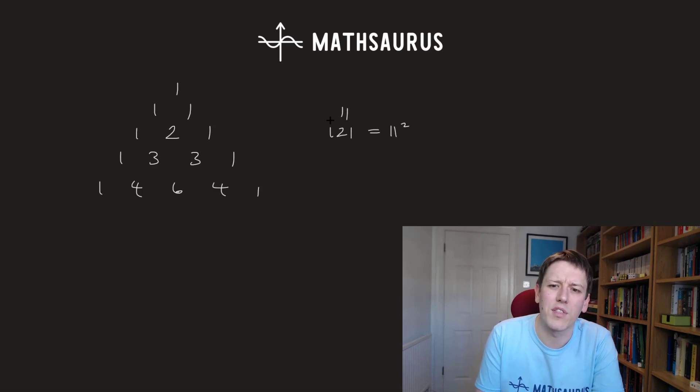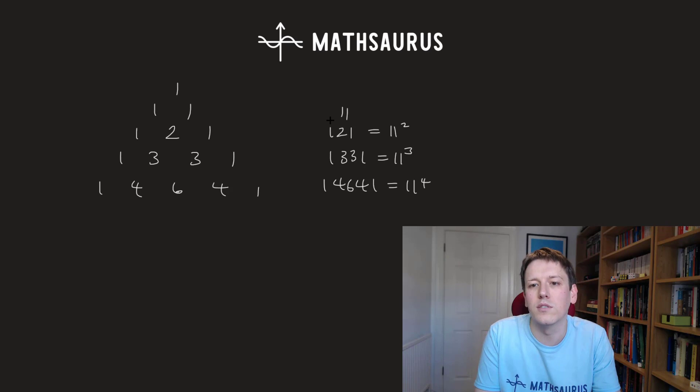You can check that 1, 3, 3, 1 is 11 cubed, and 1, 4, 6, 4, 1 is 11 to the power of 4. Of course, we've also got 11 is just 11 to the 1, and even the first row here, or sometimes we call it the 0th row, 1 is actually 11 to the 0.